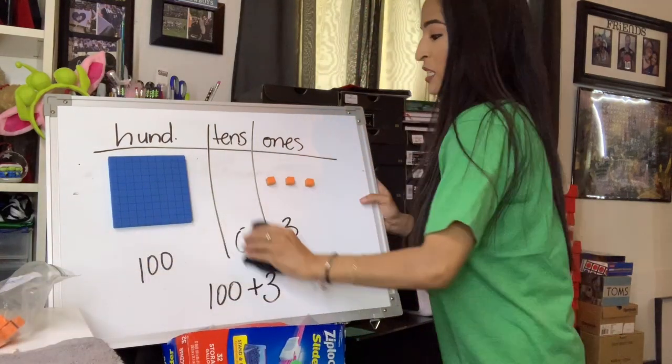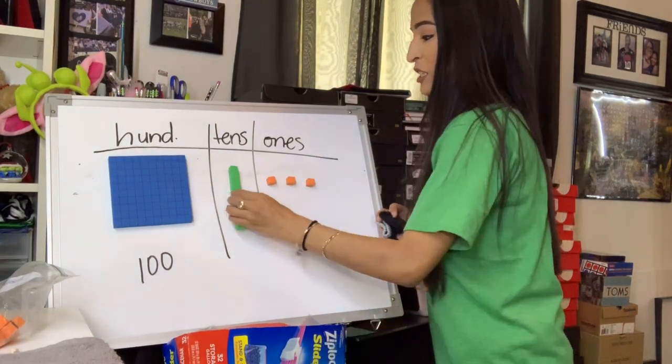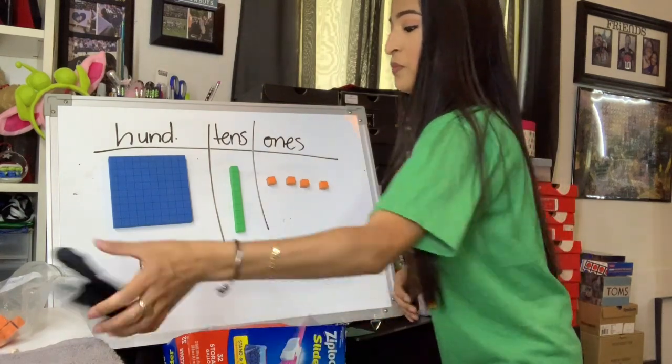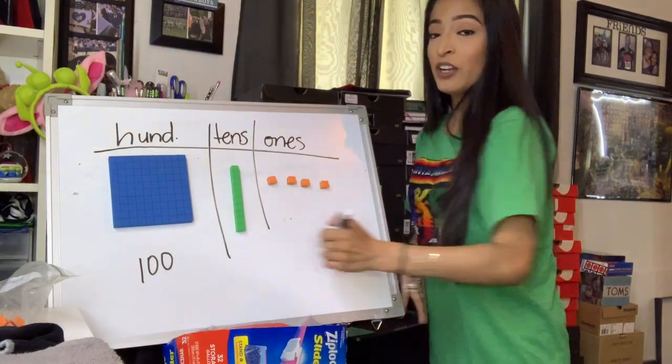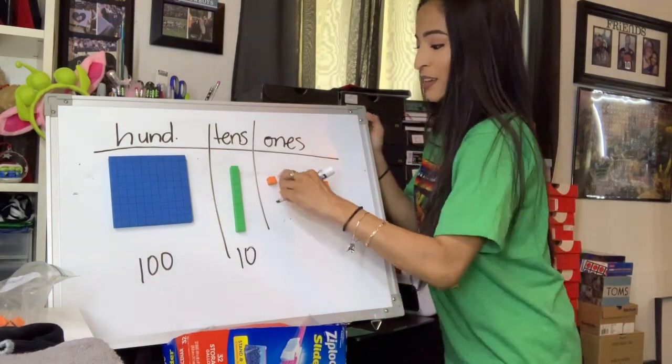So that means that when we do add a tens place, it would be a little different. You will still have 100, but now you have 10 and you have one, two, three, four in the ones place.